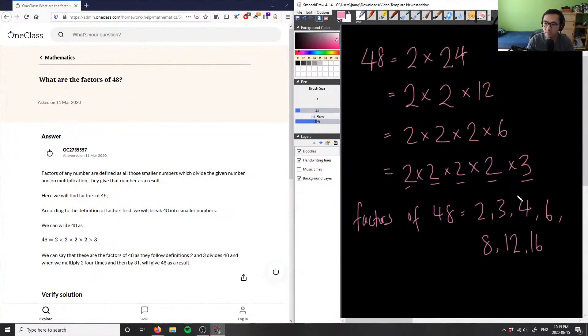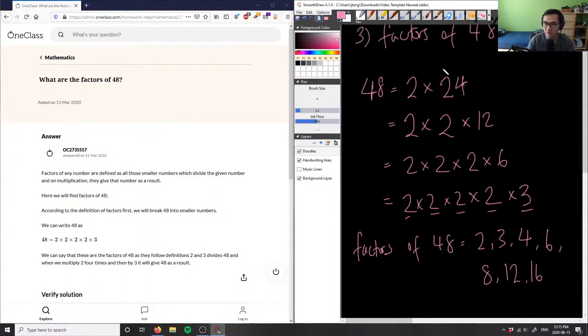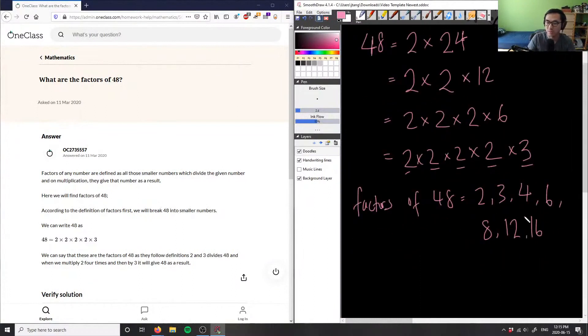16 is a factor. 16 times 3. And then finally, I have a factor of, let's see, 2 times 2 times 2 times 2, which would give me a factor here would be 24 as a factor as well. So this here is also a factor. So these are all my factors of 48.